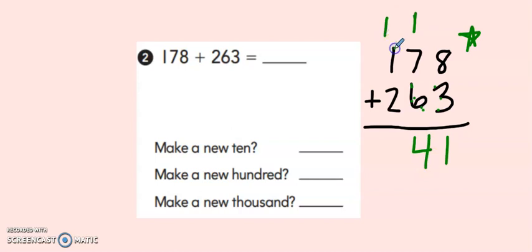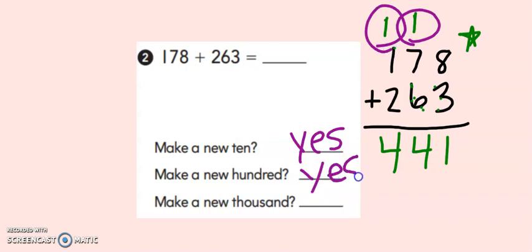Two, three, four. Four hundred forty-one. Now let's answer our questions on the side. Did I make a new ten? Yes I did. Did I make a new hundred? Yes I did. Did I make a thousand? No, I did not. So in this problem, just like the last one, I needed a new ten, I needed a new hundred, but I did not make a new thousand.